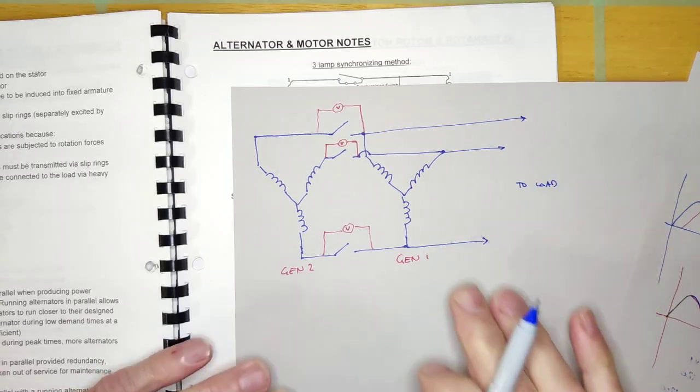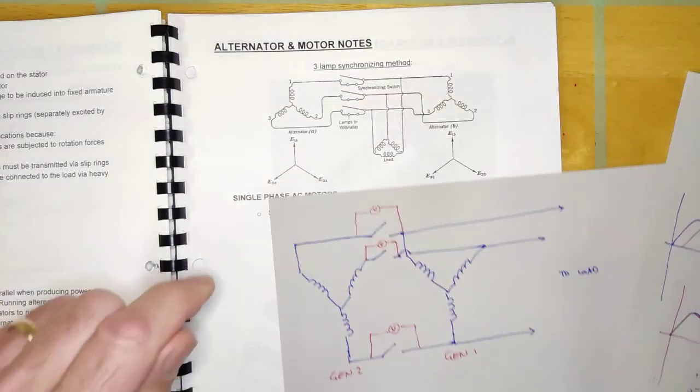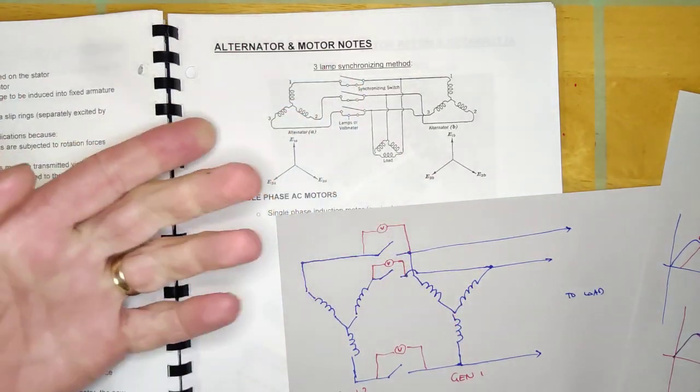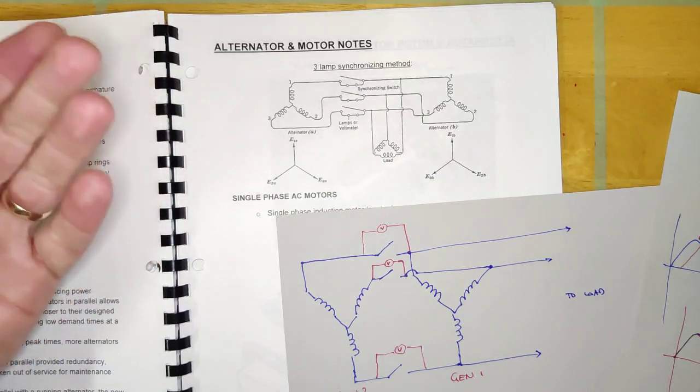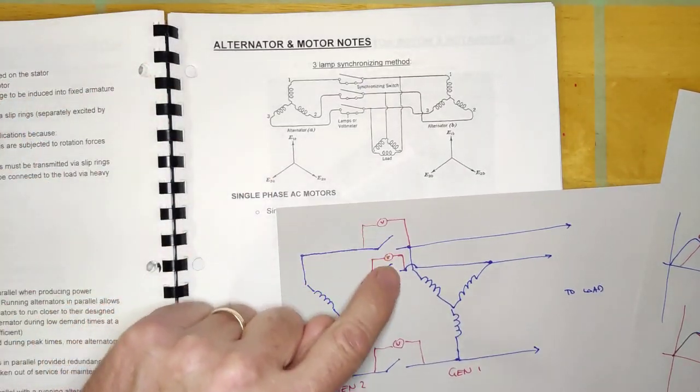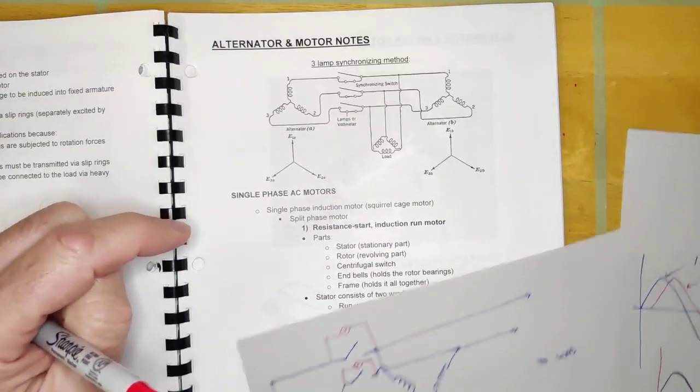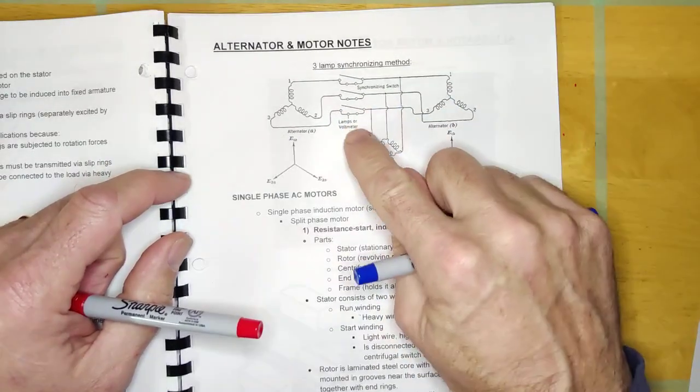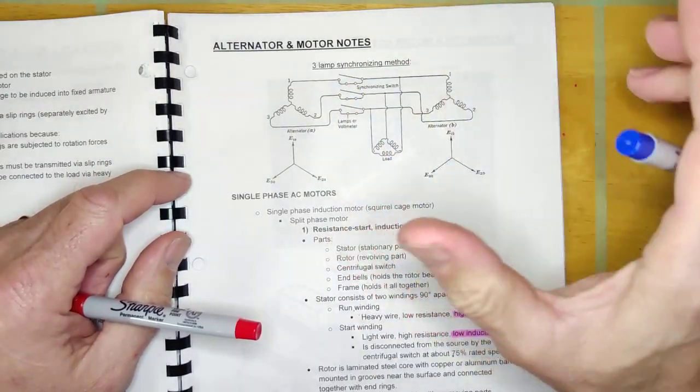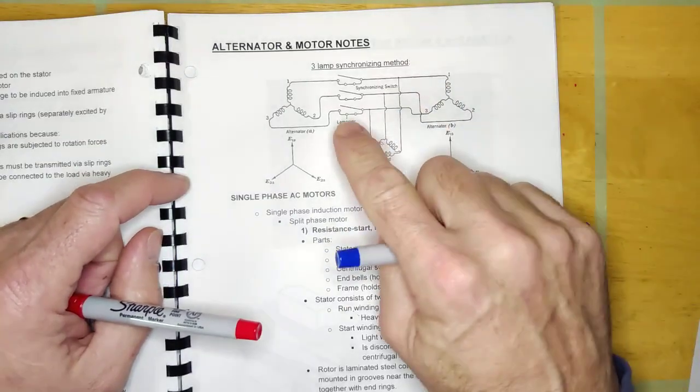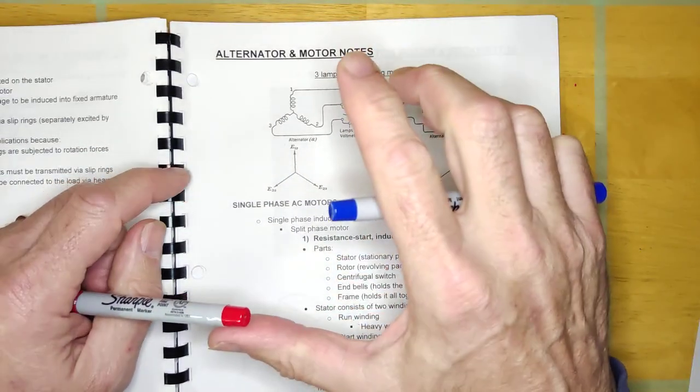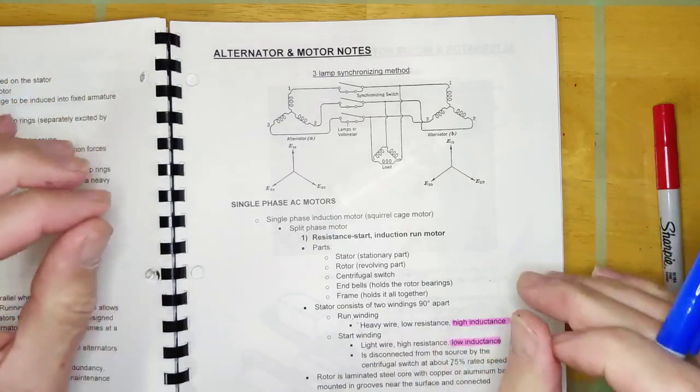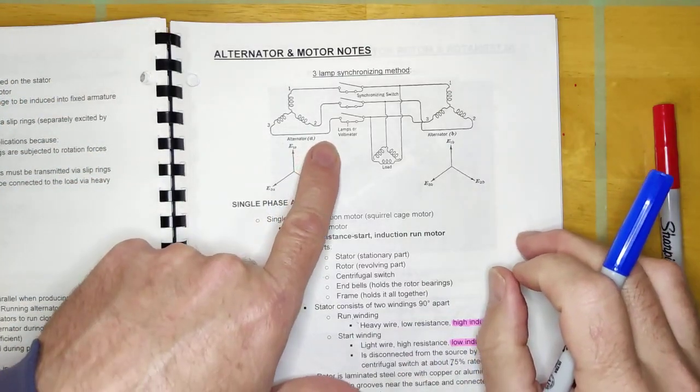That's what the three lamp method is - here they show voltmeters or lamps, and when the lamps go out you know everything is cool and you can close the switch. To me, voltmeters seem more practical. Now I'm fully aware you will never see anybody doing this manually because this is going to be fully automated at Bruce Nuclear or wherever. There's going to be equipment synchronizing everything and then automatically closing the switch.